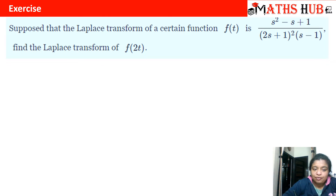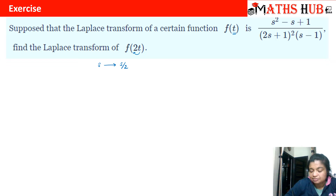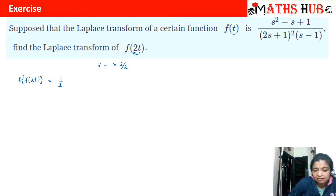The next question gives us that the Laplace transform of a certain function f(t) is (s² - s + 1) / ((2s + 1)² · (s - 1)). We need to find the Laplace transform of f(2t). That means for t we are now multiplying t with 2. So what is the effect on the answer? S will get shifted to s/2 — you are multiplying by 2, so on the right hand side s will shift to s/2 and we will also divide by 2.